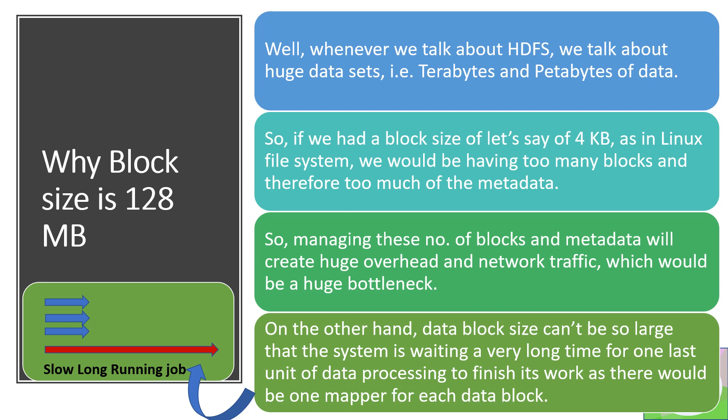A key question is: why is the block size 128 MB? What is the rationale behind this number? This number is a benchmark — it is the optimum size for parallel data processing. A block of 128 MB is a good enough size to perform processing even on minimalistic clusters.